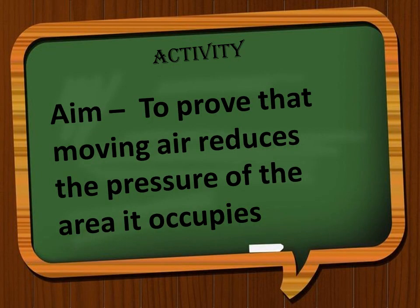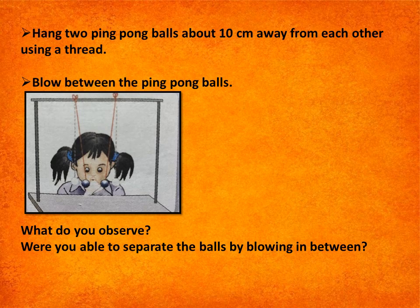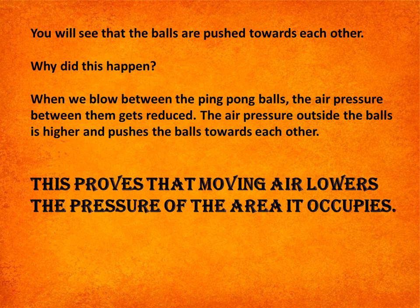Let us perform another activity to prove that moving air reduces the pressure of the area it occupies. Hang two ping pong balls about 10 centimeters away from each other using a thread. Blow between the ping pong balls as shown in the figure. You will observe that the balls are pushed towards each other. When we blow between the balls, the air pressure between them gets reduced. The air pressure outside the balls is higher and pushes them towards each other. This proves that moving air lowers the pressure of the area it occupies.